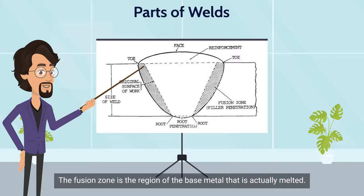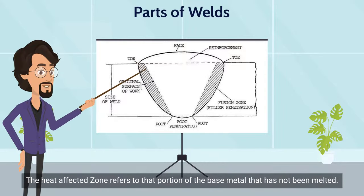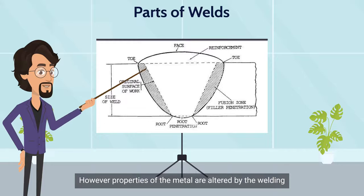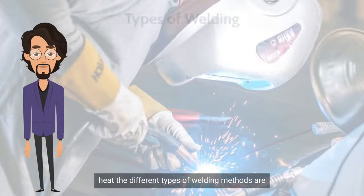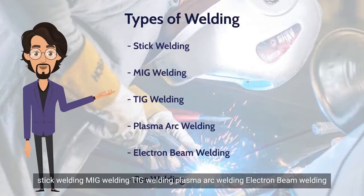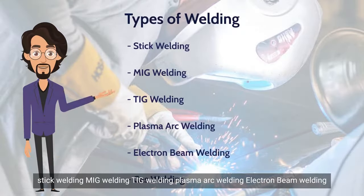The fusion zone is the region of the base metal that is actually melted. The heat affected zone refers to that portion of the base metal that has not been melted, however the properties of the metal are altered by the welding heat. The different types of welding methods are stick welding, MIG welding, TIG welding, plasma arc welding, electron beam welding, and gas welding.